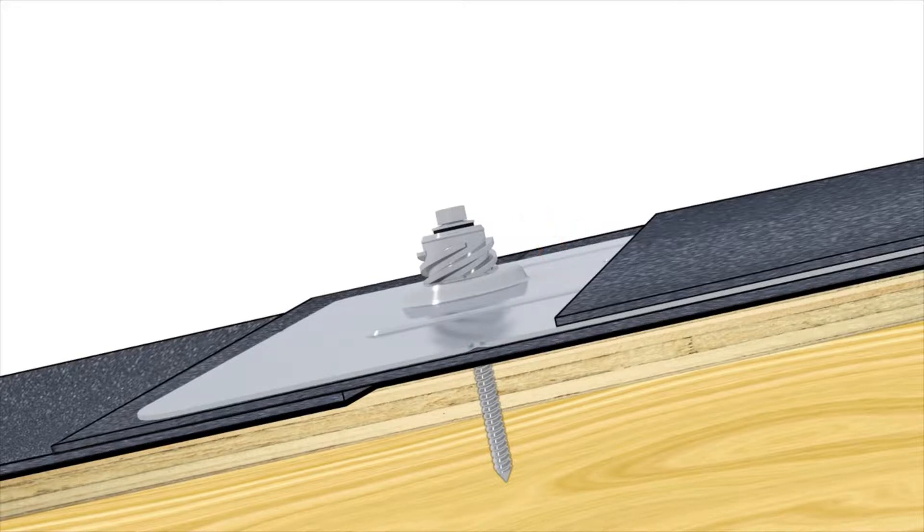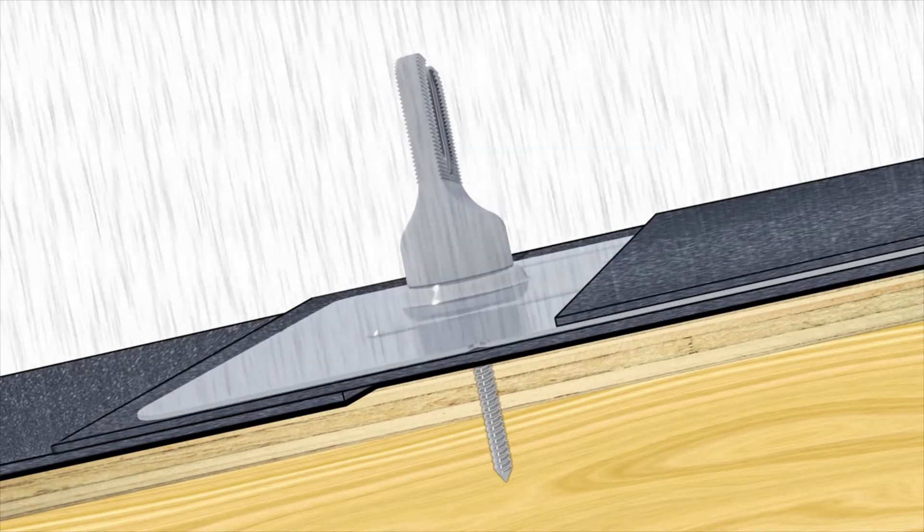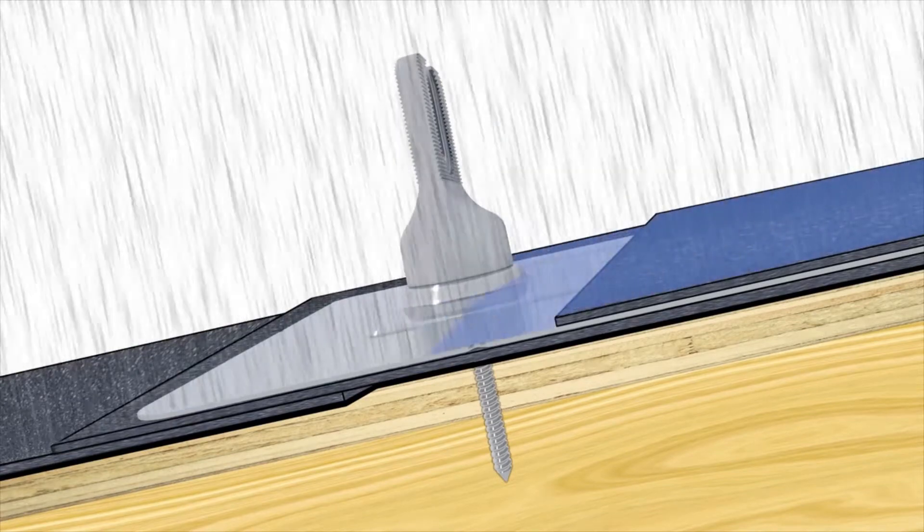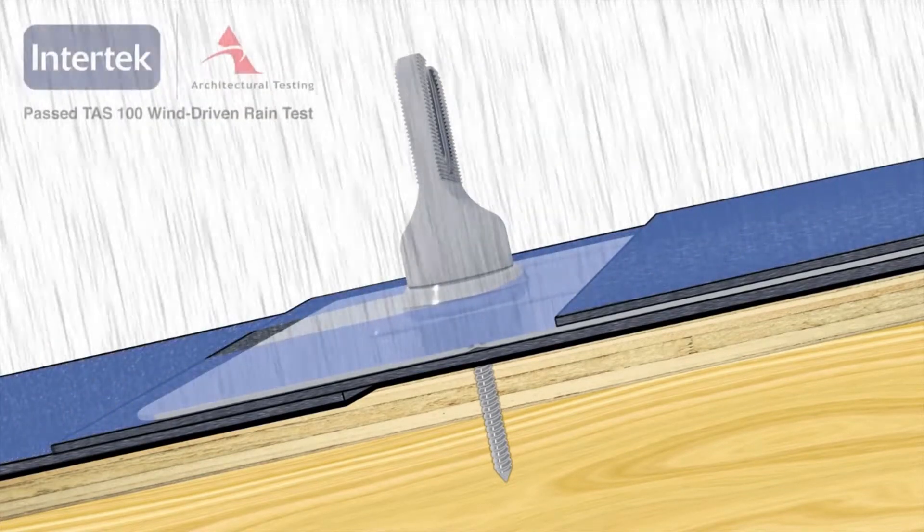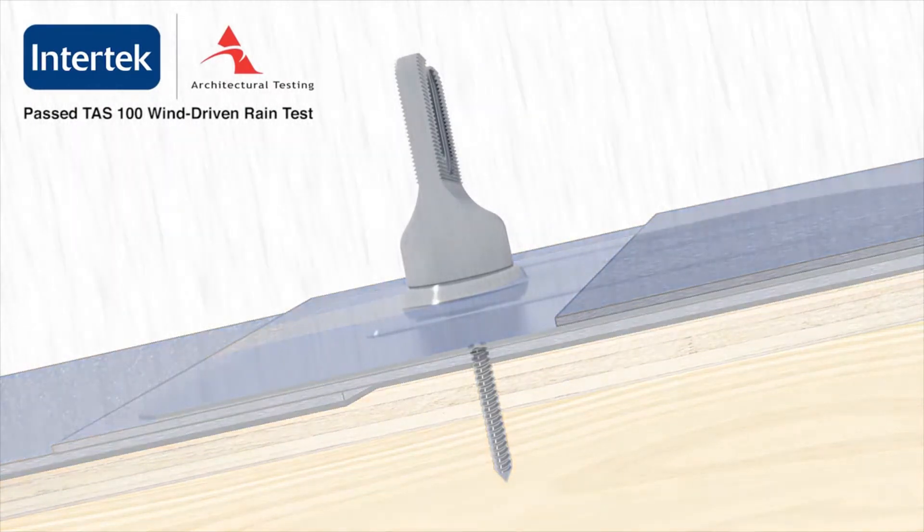This is then complemented by the FlashFoot cap, which fully encapsulates the water seal. With the redundant protection of an elevated and encapsulated water seal, FlashFoot 2 is the only solar attachment to pass the TAS-100 wind-driven rain test.